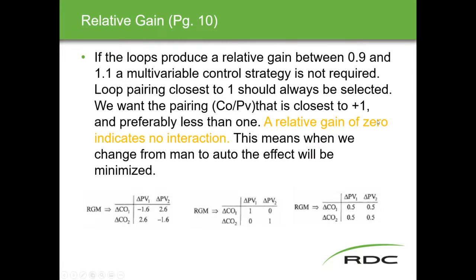A relative gain of zero would indicate no interaction — switching from manual to auto would produce no bumps or hiccups. If the relative gain is between 0.9 and 1.1, a multi-variable strategy is not required because one loop hardly interacts on the other. That's why we want to pick a loop pairing closest to one — preferably positive one; less than one is not bad either.